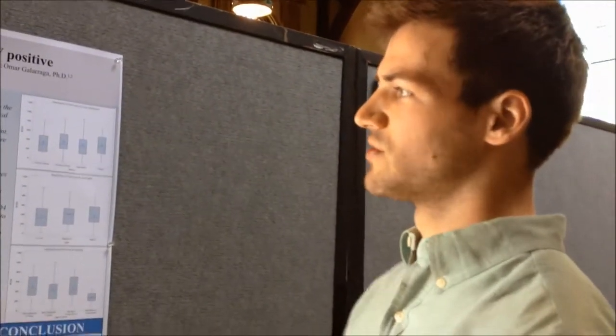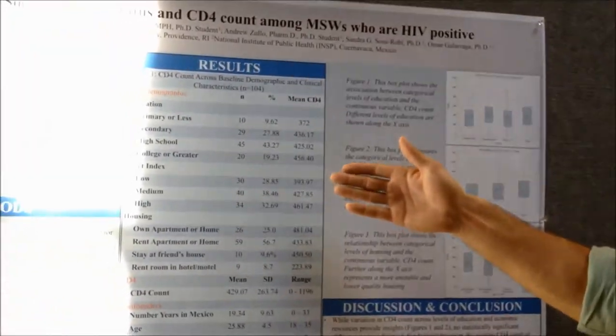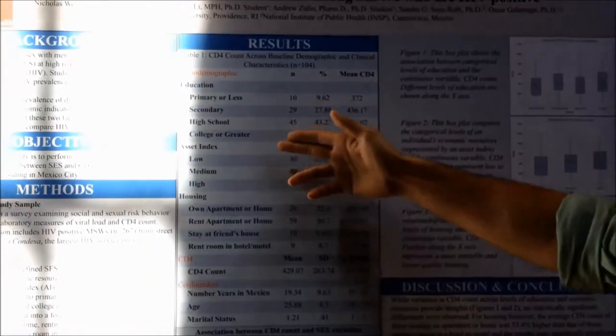In our research, we broke socioeconomic status into three subcategories: education, asset index, and housing.